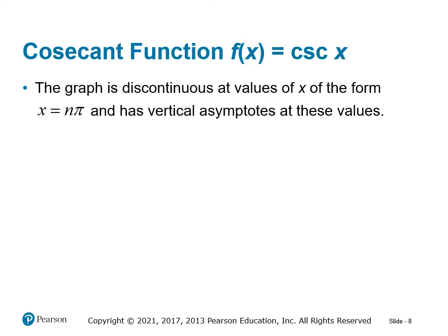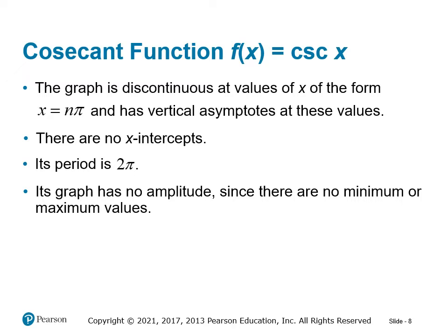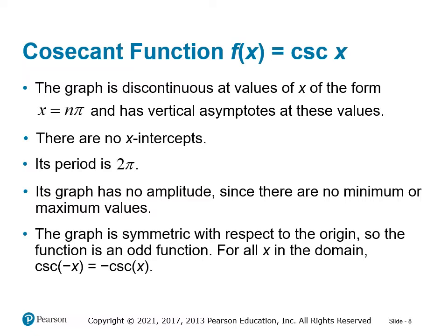Continuing with the cosecant function, it has vertical asymptotes at all multiples of π, which is where the sine function would equal 0. There are no x-intercepts. Its period, again because of the reciprocal, is 2π. Because it goes on unending to infinity and negative infinity, there are no maximums or minimums, so there's no amplitude. The graph is symmetric with respect to the origin, so this is an odd function.